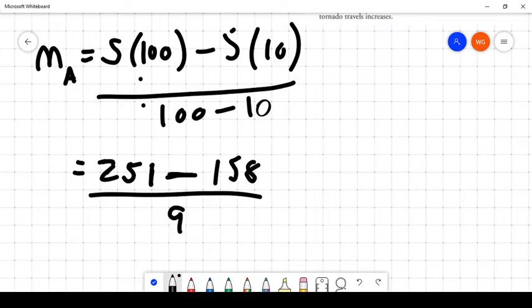And 100 minus 10 is 90. So what we'll do is go ahead and figure that out. We'll do 251 minus 158 divided by 90, and that equals 1.03. Let's make sure we clear that up. That equals 1.03 repeat. 1.03 repeat.